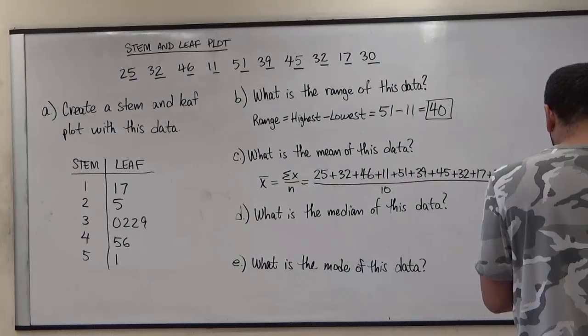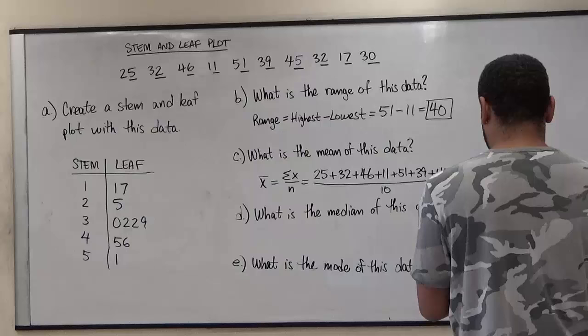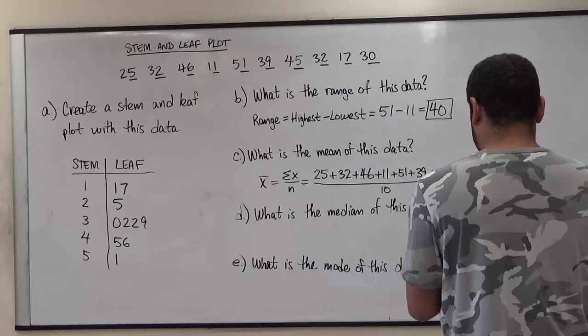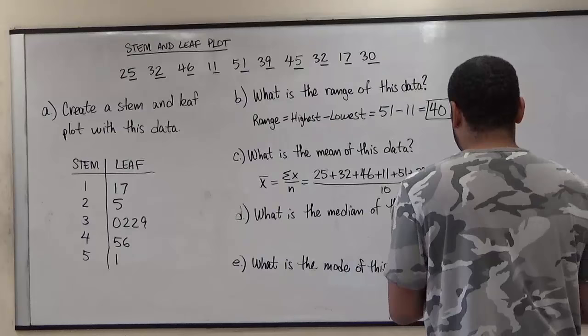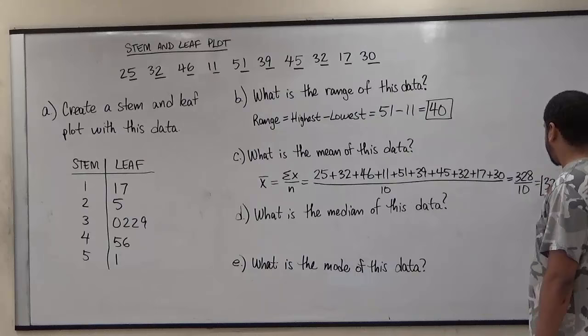So we have twenty-five plus thirty-two plus forty-six plus eleven plus fifty-one plus thirty-nine plus forty-five plus thirty-two plus seventeen plus thirty. That is three hundred and twenty-eight. Make sure you're using a calculator while adding these. Once you add them and divide them by ten, this division is going to give us thirty-two point eight. And thirty-two point eight is our average, our mean.